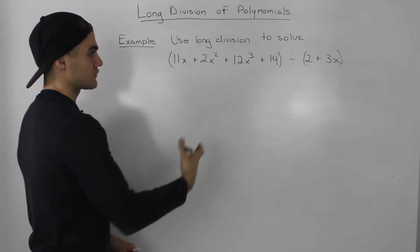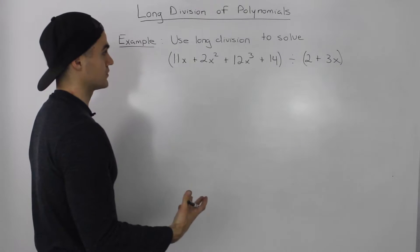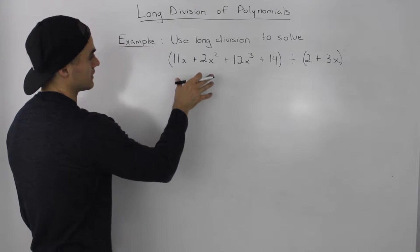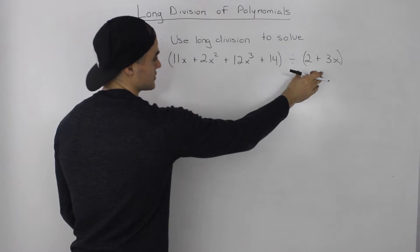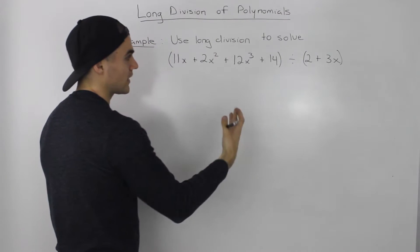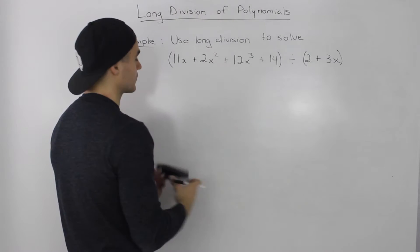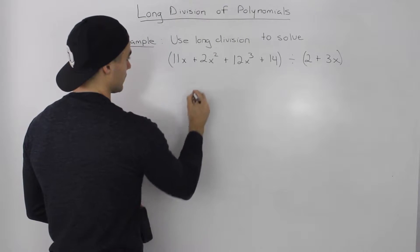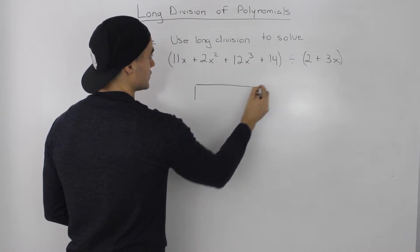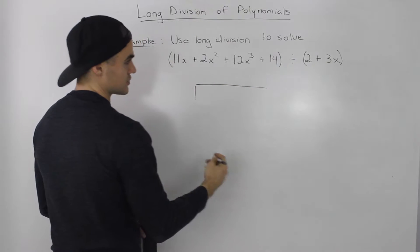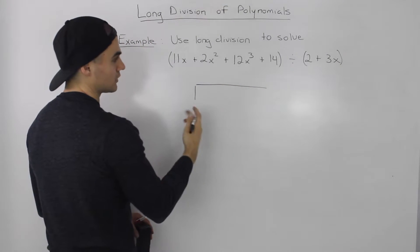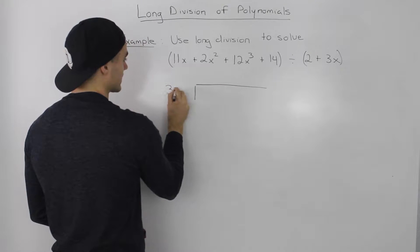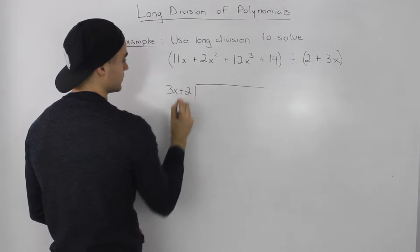The first thing we always have to do is make sure that the dividend and the divisor are arranged from highest degree to lowest degree when we divide. So if we rewrite the division, let's take the divisor and rearrange it — this 2 plus 3x we would rewrite as 3x plus 2.